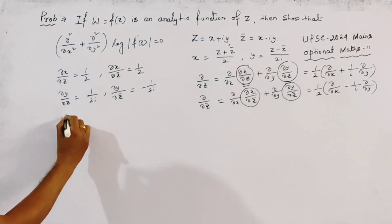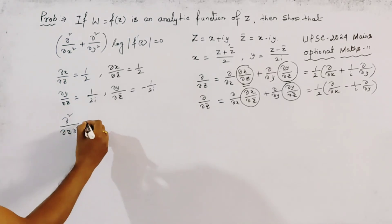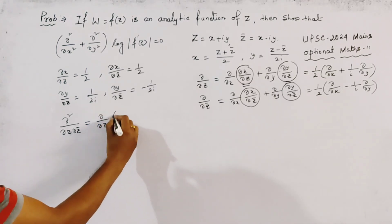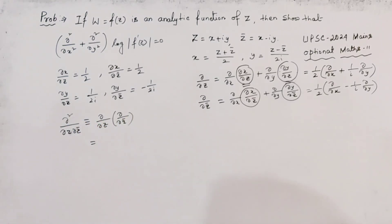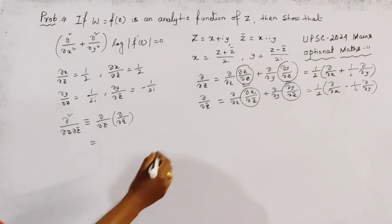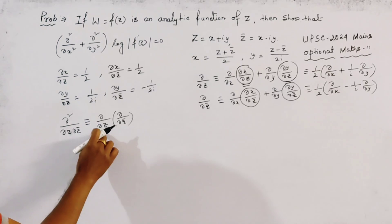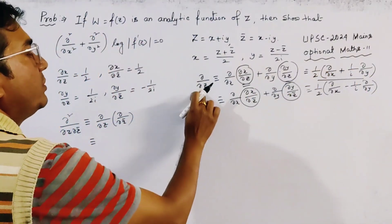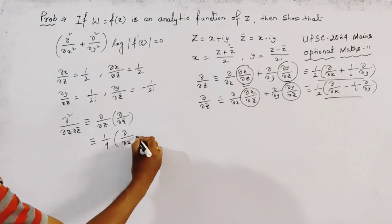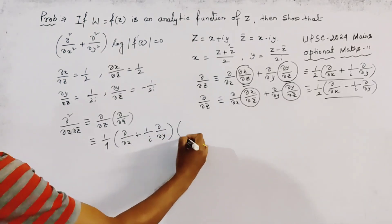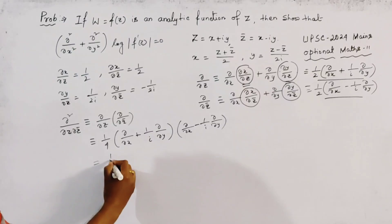Now we find the value of ∂²/∂z̄∂z, which is (∂/∂z)(∂/∂z̄). We substitute both operators: this equals (1/4)(∂/∂x + (1/i)∂/∂y)(∂/∂x − (1/i)∂/∂y).